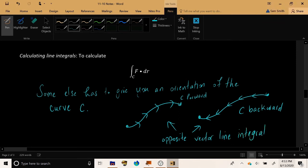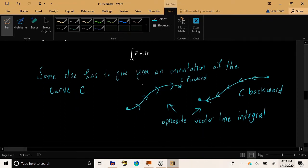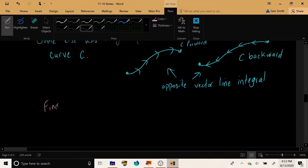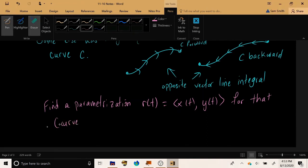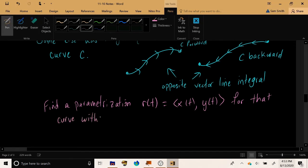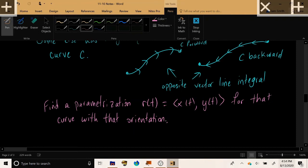So when someone is telling you, please calculate this line integral, they need to have decided what orientation they're interested in for us to calculate the line integral. So you get that information from the person. You get the information about the orientation, the direction in which the curve should be traversed. And then find a parameterization R(t). So as t increases, we should be traveling along the curve C in the direction that the person has specified.